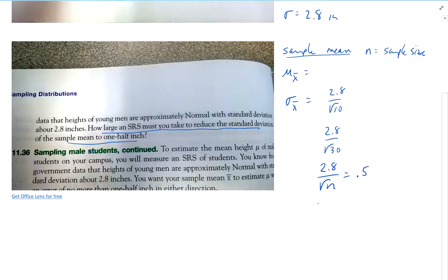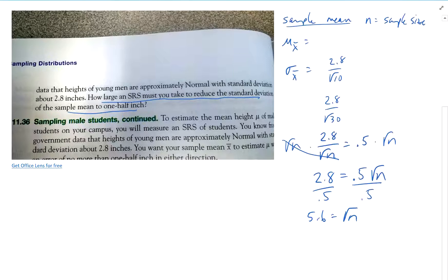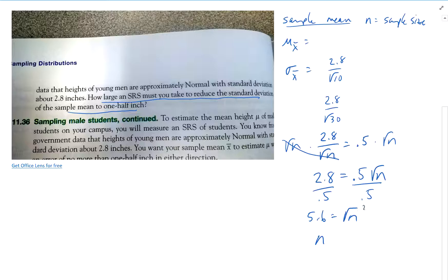Let's solve this for n. So I'm going to do some algebra here. 0.5 times the square root of n. I multiplied both sides times the square root of n. And now I'm going to divide by 0.5. And I get 2.8 divided by 0.5, 5.6. This is square root of n. And then square it. So I square both sides. 5.6 squared gives me 31.36.